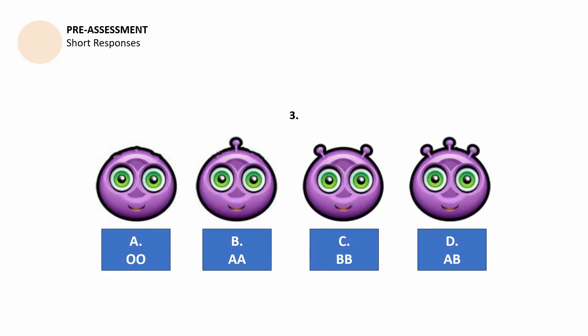Question number three has the following answers. So A has OO, B has AA, C has BB, and D has AB. That is it for the pre-assessment. I hope that you got 3 over 3.